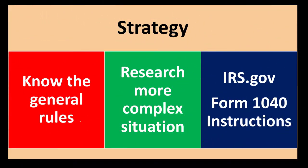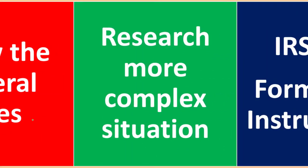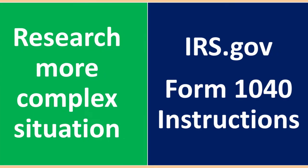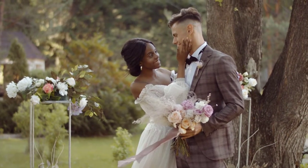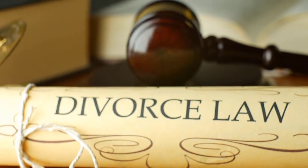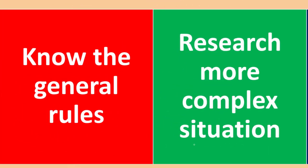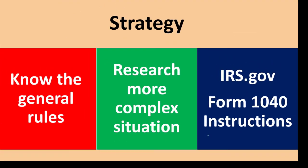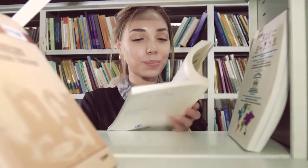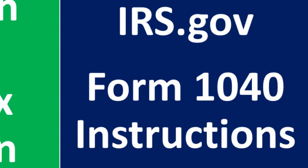Remember the strategy: you want to have the general rules in place, including who qualifies for what. Usually it's fairly straightforward between the different filing statuses, but then there could be a gray area — such as whether someone is married at the end of the year, whether someone is divorced or separated. You can start your research on those areas by going to irs.gov and looking at the Form 1040 instructions to pick up more information.